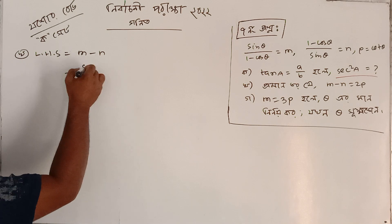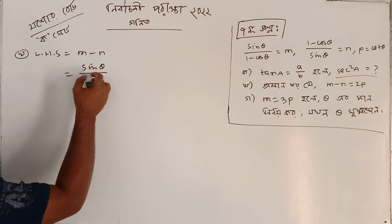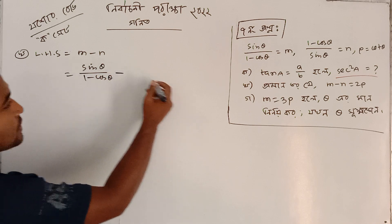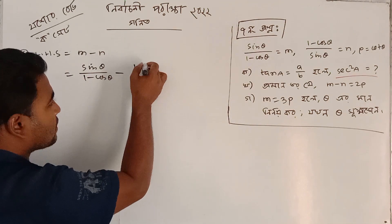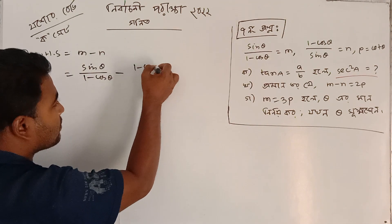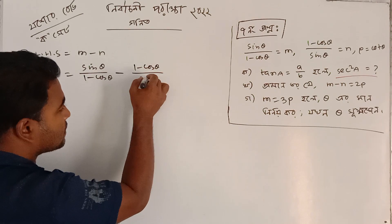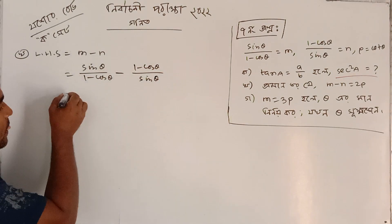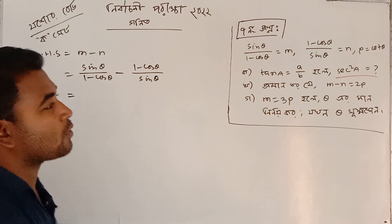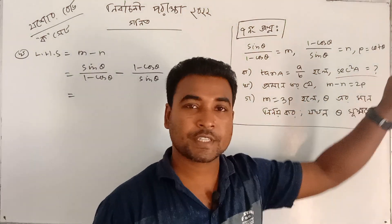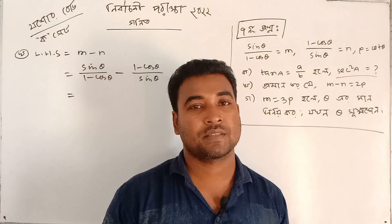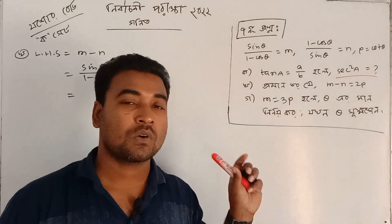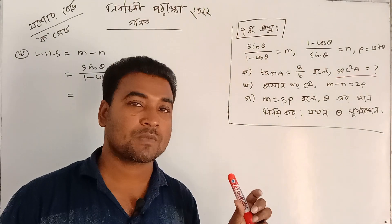Left-hand side m minus n. What is the answer? sin θ divided by (1 minus cos θ), minus (1 minus cos θ) divided by sin θ. Look, we have done a common factor — that means cos divided by sin, which gives cot θ.